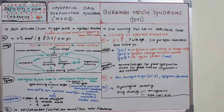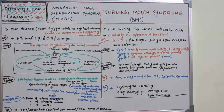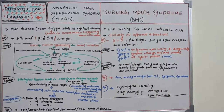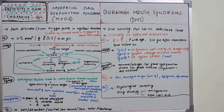Additional local factors include ill-fitting dentures, incisal space and vertical dimension problems, median rhomboid glossitis, hypersensitivity to certain foods, oral habits like tongue thrusting, carcinoma, and prolonged use of chlorhexidine mouthwash. Sjögren's syndrome can also be a contributing factor, as its associated dry mouth can cause burning sensation.